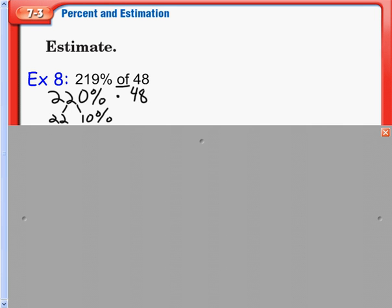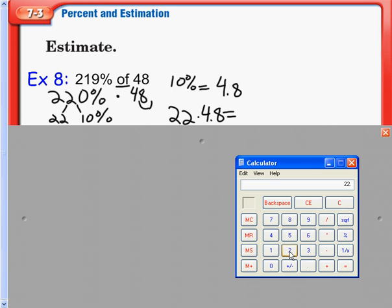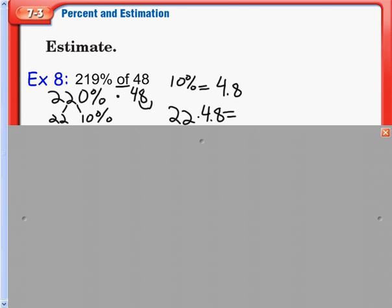So we'll just take 10% of 48, which is moving our decimal over 1, equals 4.8. Now, 22 times 4.8 gives us 105.6. So as you notice, in most of our examples, we ended up with a good number. In this case, we do have a decimal and that is alright.